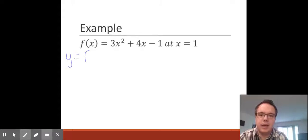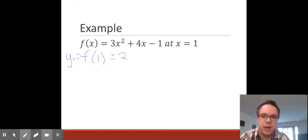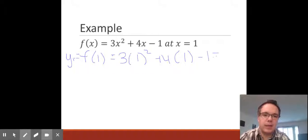I'm going to take f(1). So I'm going to plug in 1 into my function to find out what my y₁ is at this value. So 3 times 1 squared plus 4 times 1 minus 1. When I do that, what I get for y is 6.